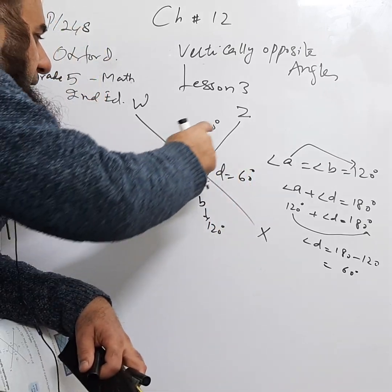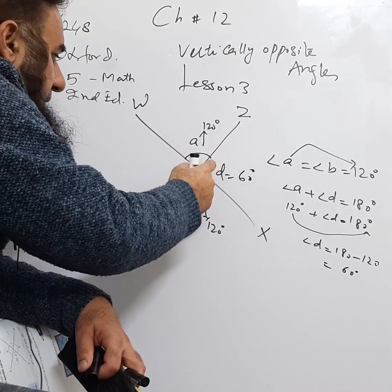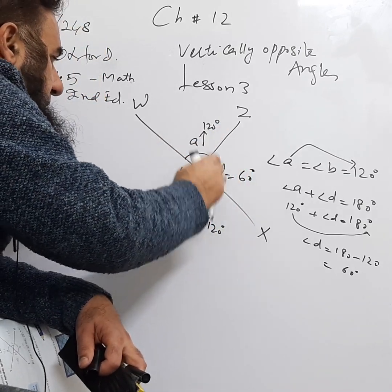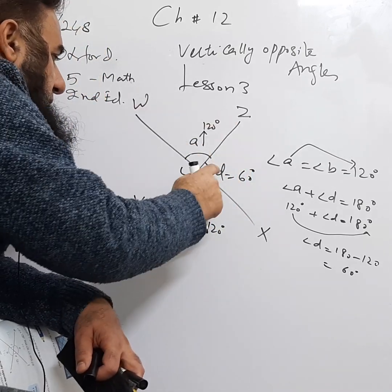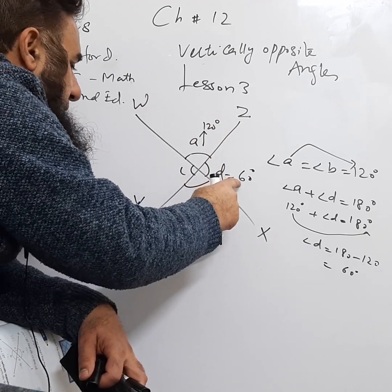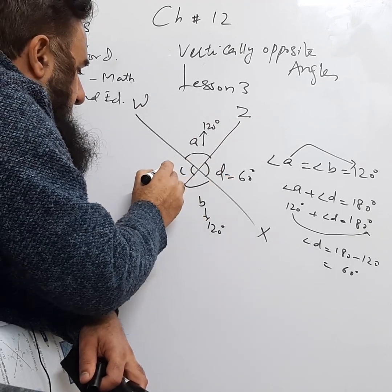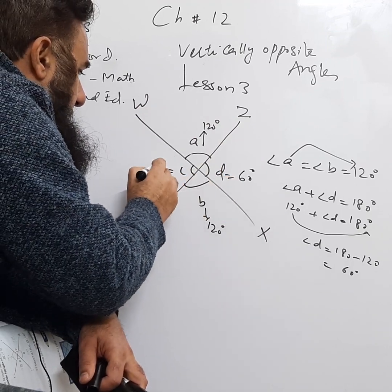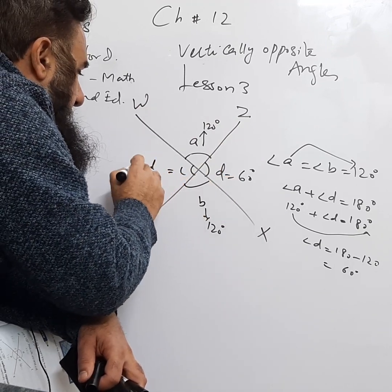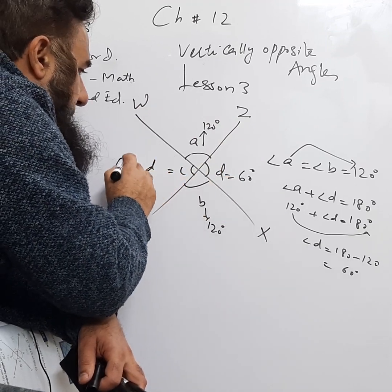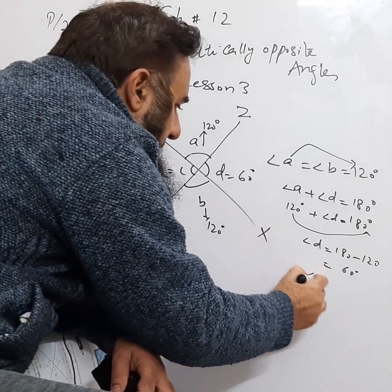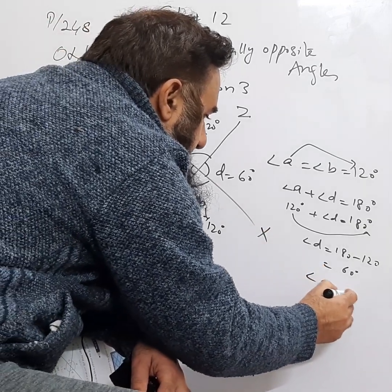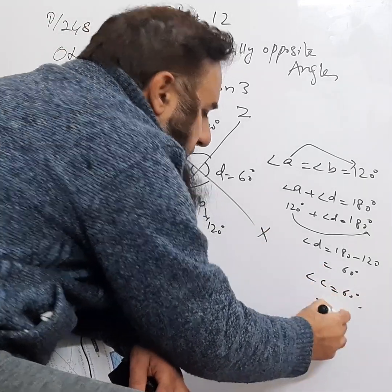And since C and D are vertically opposite — they form another X — angle C is also equal to angle D. So angle C is equal to 60° as well.